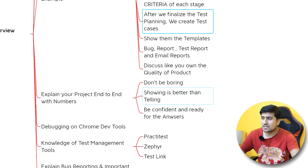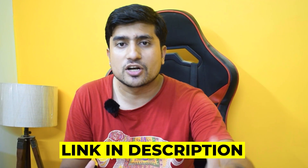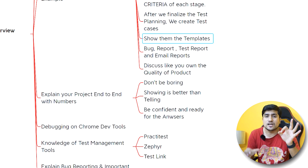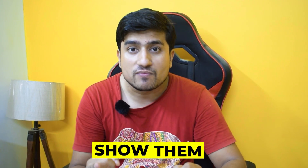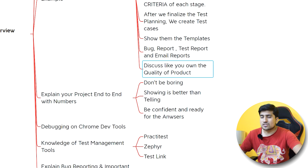After finalizing the test plan, mention the types of testing you performed, the exit and entry criteria of the different STLC life cycle phases, the types of testing, and the tools used. Don't just talk about test cases — interviewers are interested in what you did in the project overall. Show them templates; this is very important. I'm going to attach multiple templates in the description: test plan, test cases, RTM (Requirements Traceability Matrix), bug reporting, and test reporting templates.